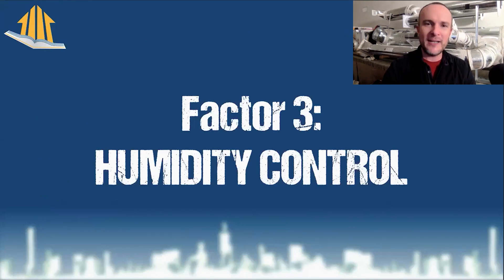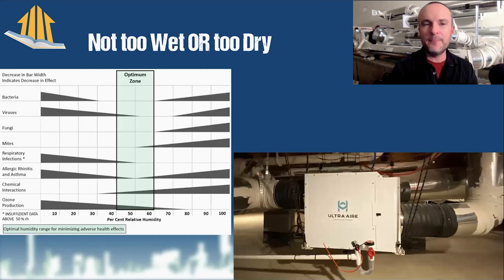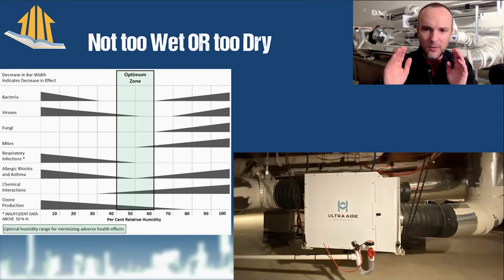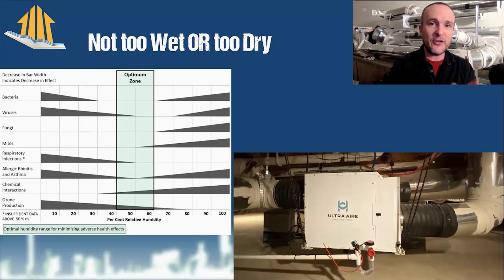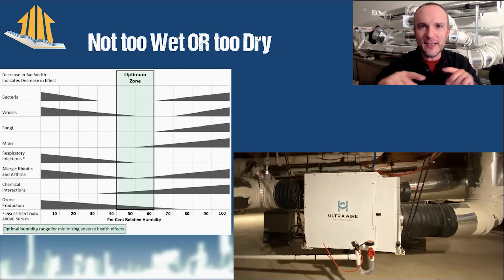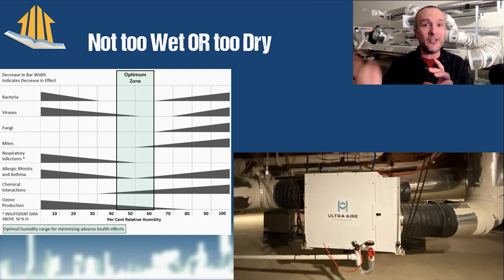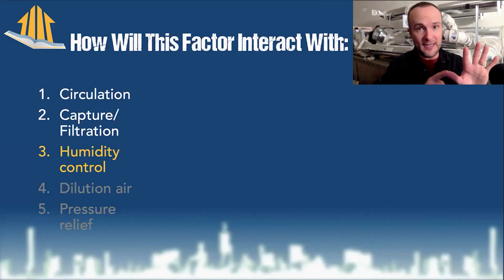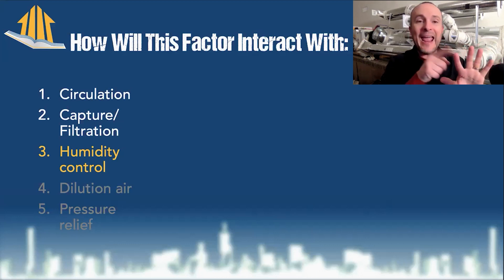Humidity control is factor three. It applies to wintertime, which is typically drier, and summertime, which is typically wetter — but you don't want it too wet or too dry, as there are health dangers at both ends of the spectrum. In tighter, higher-performance homes you'll cross a line where you have to worry more about this, because you don't have the diffuse air leakage throughout gaps and cracks. Before moving to dilution air, we need to revisit how we're going to circulate and filter this humidity-controlled air.